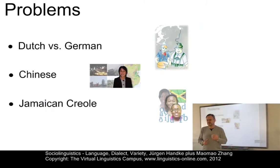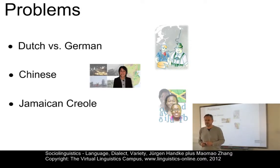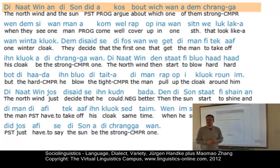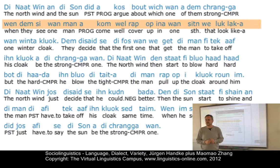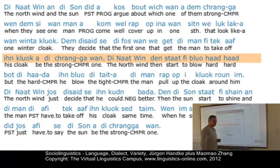The Chinese problem told us quite clearly that we must distinguish between phonology and orthography. The next problem concerns a language often classified as a variety of English — but is it really? Do all native speakers of English understand the following text in Jamaican Creole? After playing the example, the question is: did you understand it? Well, obviously there are problems with the concept of mutual intelligibility.